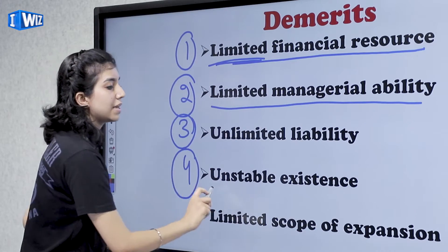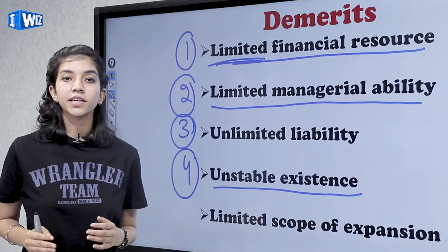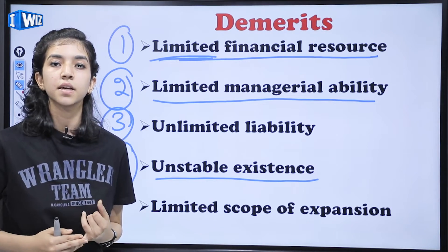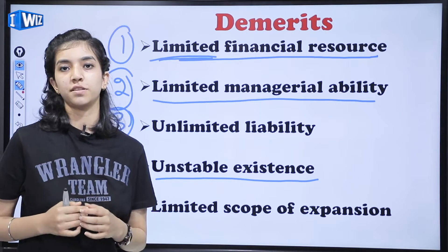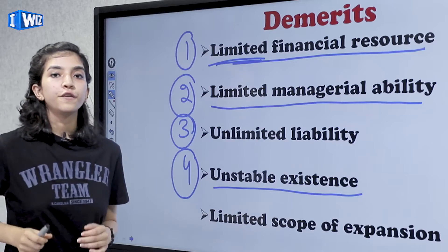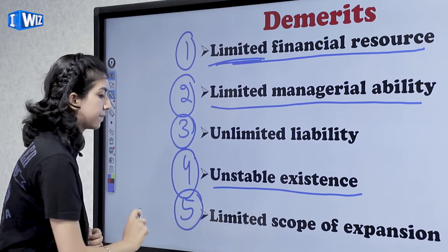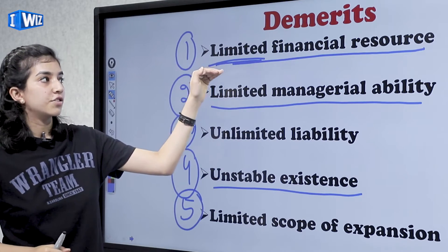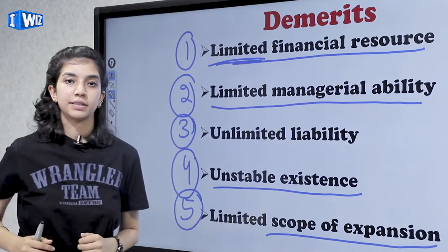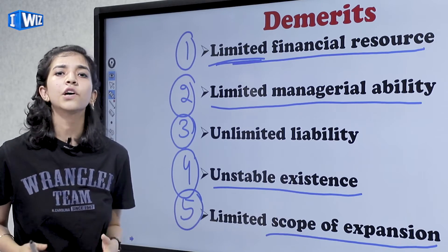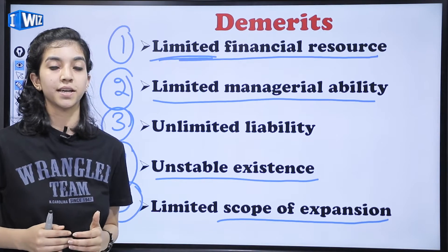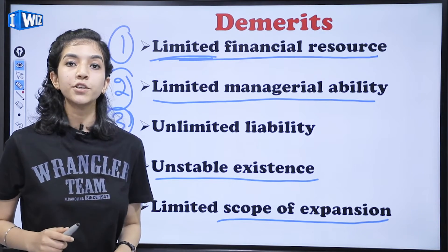The fourth demerit is unstable existence — since one person does everything, if something happens to him — if he meets with an accident or goes mentally unstable — the business stops and there is nobody to continue it. The fifth demerit is limited scope of expansion — because of limited financial resources and limited managerial ability, expansion is also a problem. You can only expand your business when you have financial resources and the ability to do so.